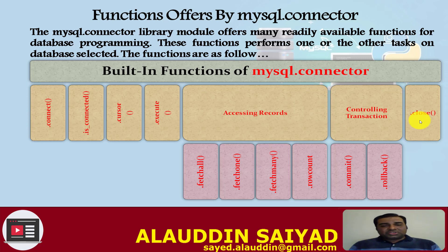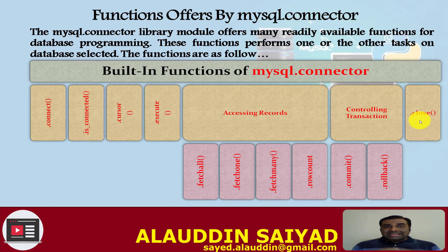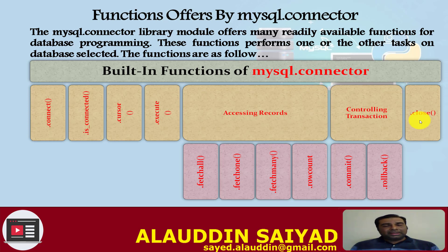Record-accessing functions include fetchall(), fetchone(), fetchmany(), and rowcount(). When we execute a select command in MySQL, the output rows are considered a result set. If we execute the select command from Python, MySQL generates the rows and columns and sends them back to Python as the result set.